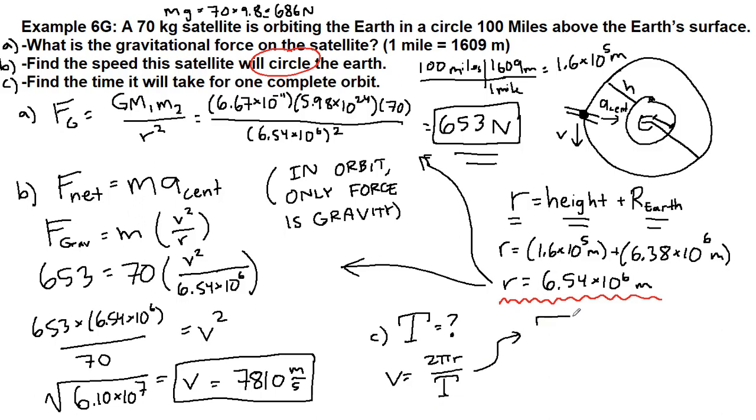So if we're solving for the time period, we can multiply both sides by time period, and then divide both sides by the speed, we get that the time period is equal to 2 pi r over v. So we have 2 times pi, one more chance to use our correct radius here, 6.54 times 10 to the 6, over the speed we just found, 7810.